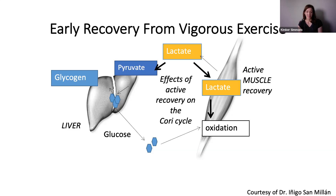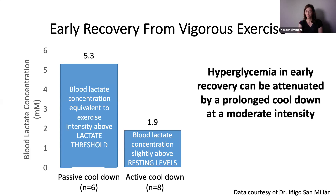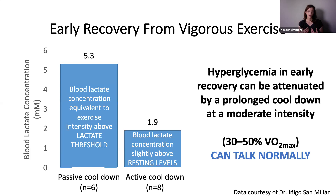Active muscle recovery can help — slowly on an elliptical or walking, your muscles can use the lactate and oxidize it so it never turns into glucose. A graph shows that people with a passive cool down had very high lactate levels, while people with an active cool down had much lower lactate, meaning lower blood glucose levels. Hyperglycemia in early recovery can be attenuated by a prolonged cool down at about 30 to 50% of maximal oxygen consumption — essentially a pace where you can talk normally.